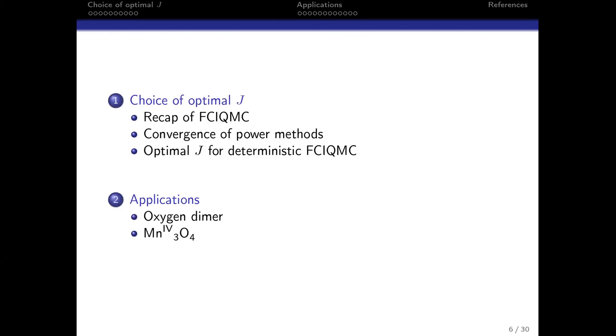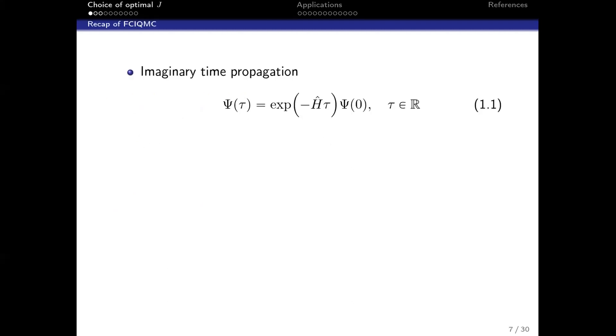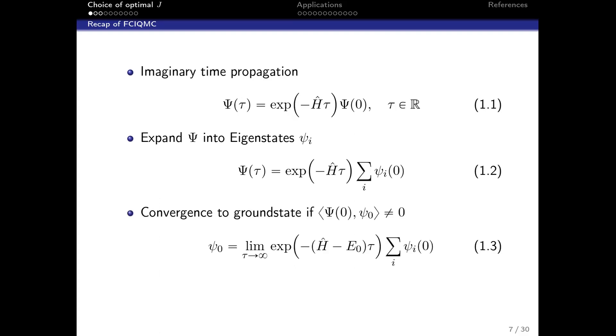I will talk about the choice of optimal J, recap FCIQMC working equations, and then applications. FCIQMC is based on imaginary time propagation where we start from a starting guess, usually one determinant. We expand our starting guess into eigenstates of our Hamiltonian. As you make tau larger, you project out all the high energy eigenstates. If you let tau go to infinity with some renormalization, you converge to the ground state.